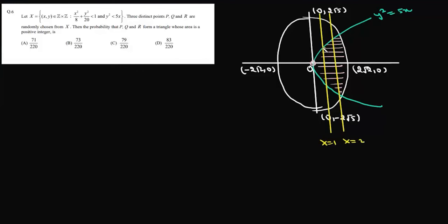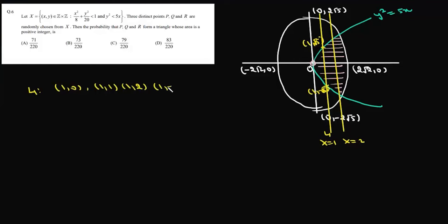When x = 1, substituting into the parabola y² = 5x gives y² = 5, so y = ±√5. Since √5 ≈ 2.something, the integral points on line L1 are (1, 0), (1, 1), (1, 2), (1, -1), and (1, -2), giving five points on L1.